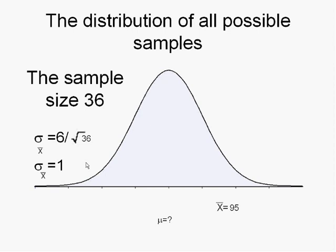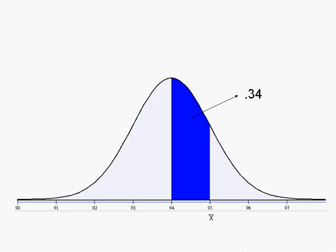But we want to know how confident we are about this. What is the chance that the mean of the real population has been 94 milliliters, but by accident we took a sample with a mean of 95? We should be able to answer this question easily. If we know that the distribution of all possible samples has a normal curve and we assume the mean of the population has been 94, then the mean of the sample distribution of all these means will also be 94.